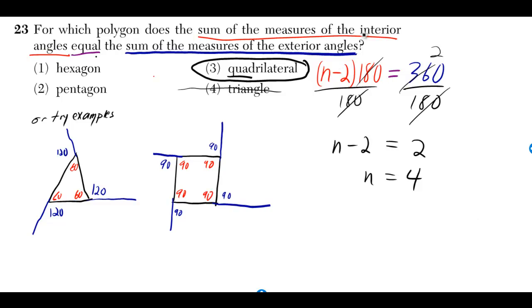The formula for the sum of the measures of the interior angles is n minus 2 times 180, where n is the number of sides. The sum of the measures of the exterior angles is always 360.